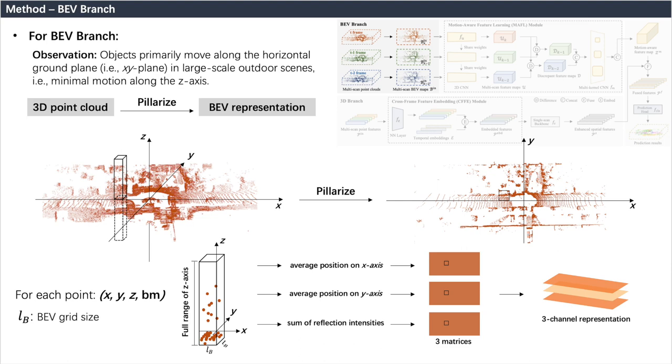Specifically, for each frame of point cloud, we pillarize it to compress the information in the z-axis, and map it into a three-channel 2D feature as the input BEV representation.